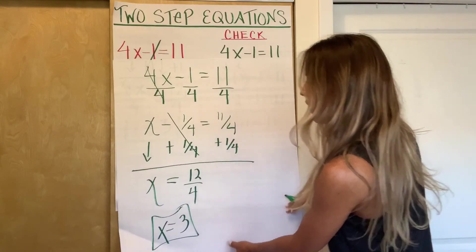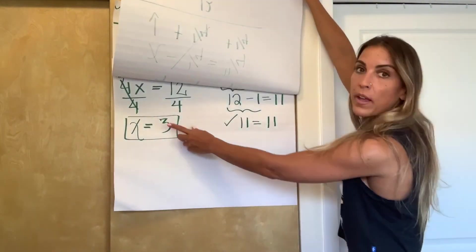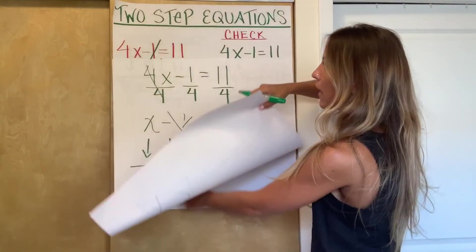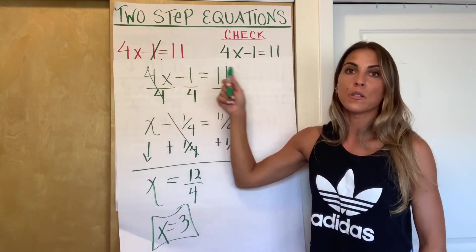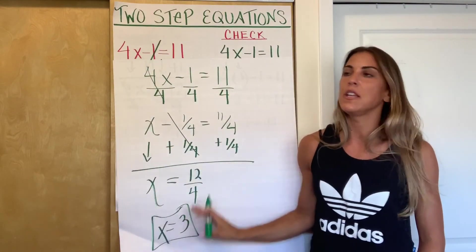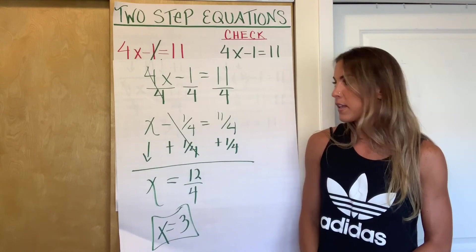So we actually get the same solution that we got up here the first way we did it. But I think that most of you are going to agree that it was easier when we did plus 1 on both sides first. But I do want you to see that you can always do these things a second way.